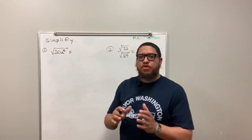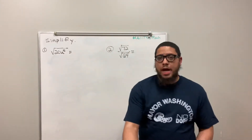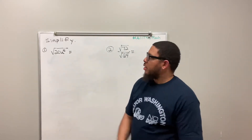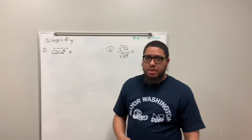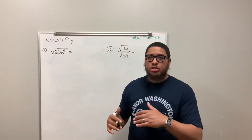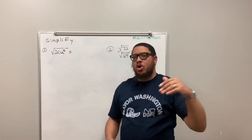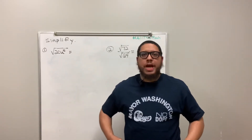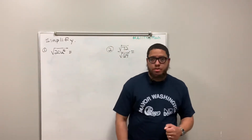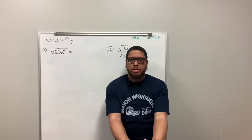Now, you always first look for perfect squares. Perfect squares like 1, because 1 times 1 equals 1, or 4, because 2 times 2 equals 4. Nine, because 3 times 3 equals 9. A perfect square is a term where you can take a whole number and multiply that whole number by itself and it will yield you that number — hence the perfect square.